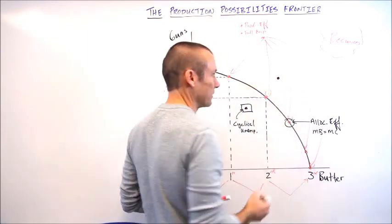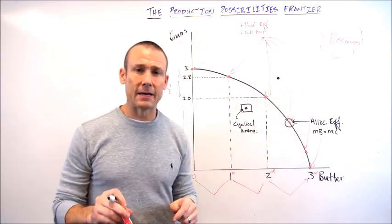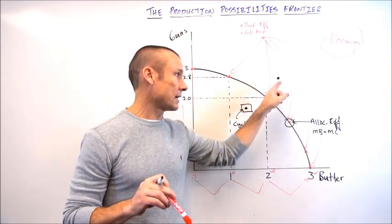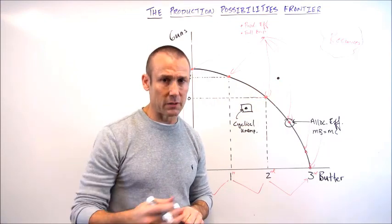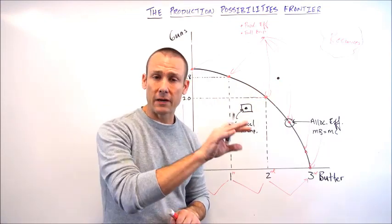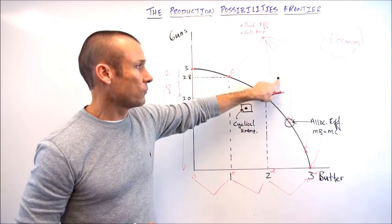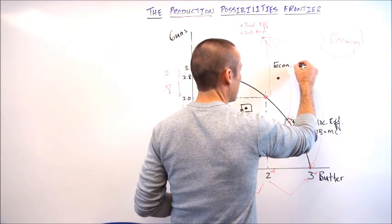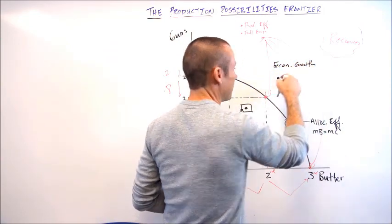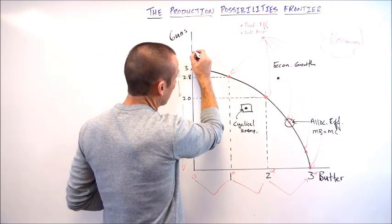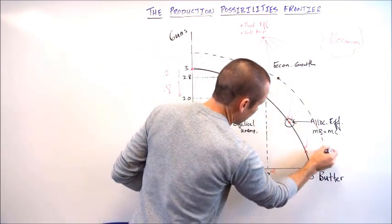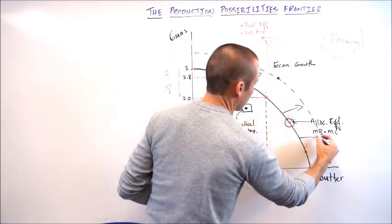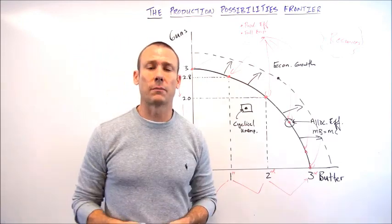A dot outside the curve is not possible to produce in the present — that is very important. We cannot produce there now, though we might consume there through trade. However, if we were able to produce outside the frontier in the future, that would represent economic growth. Achieving that future production means our entire PPF curve has shifted outward, and that outward shift represents economic growth.